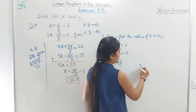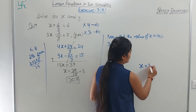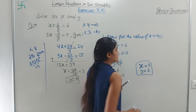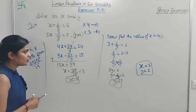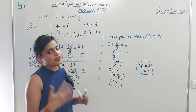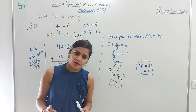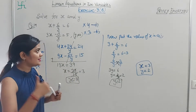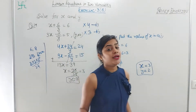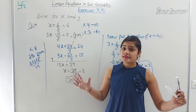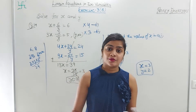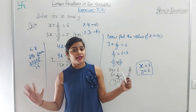So x = 3 and y = 2. This is how we solved the question and found x and y easily. We will keep solving important questions together from time to time.